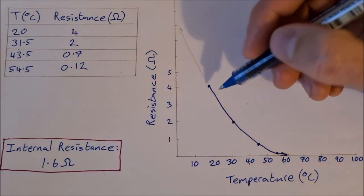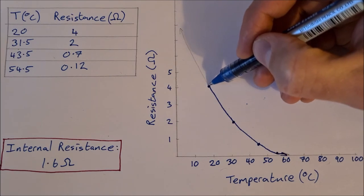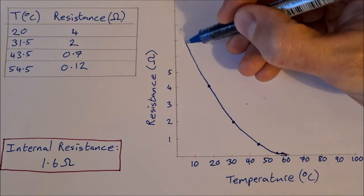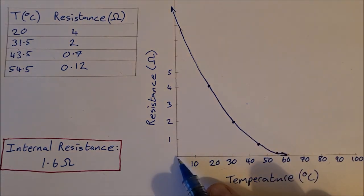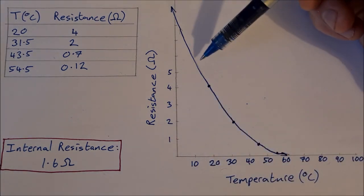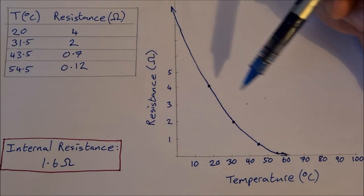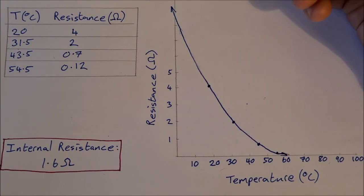If we were to cool this thermistor down, the resistance would then increase dramatically and it would continue on even beyond 0 degrees Celsius. The resistance would increase dramatically and for this thermistor, it could go up into the hundreds of ohms.